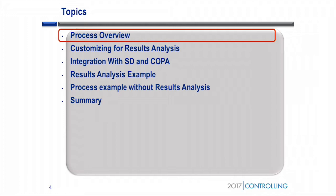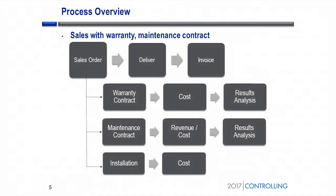So let's talk about this customer. What they do is produce — it can be for anything. The first thing they have is a sales order with a configurable material, meaning you choose options to get the finished good that is going to be produced. Some of those options include warranty, installation cost, and maintenance contract.